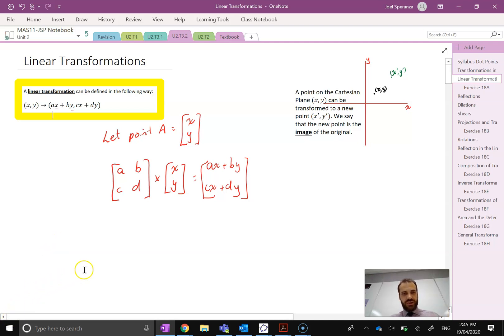So breaking this all down, we can say that to find the image A dash, all we need to do is take the matrix A—so a point can be thought of as a matrix—and multiply it by this linear transformation matrix, which we'll use L for. So the image is equal to the linear transform matrix times the original point, which is just our column matrix.